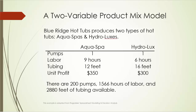In the next production planning period — let's say the next month — the company has 200 pumps, 1,566 hours of labor, and 2,880 feet of tubing available. The firm would like to find the product mix that maximizes the profit.